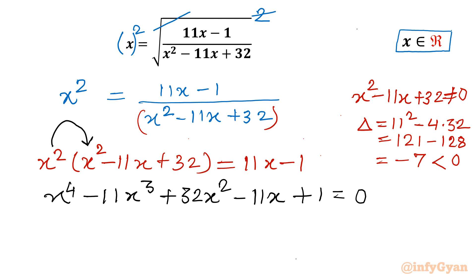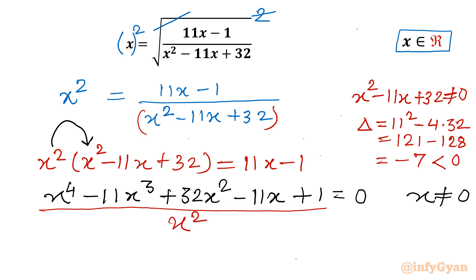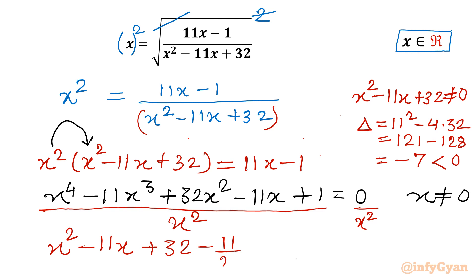Now x is not a solution of this equation, so I can divide by any power of x. The equation is of reciprocal type, so I can divide both sides by x squared. After dividing, we get x squared minus 11x plus 32 minus 11 over x plus 1 over x squared equals 0.